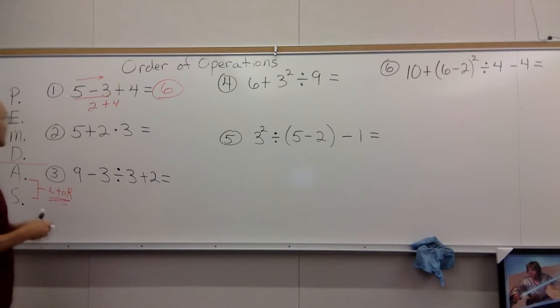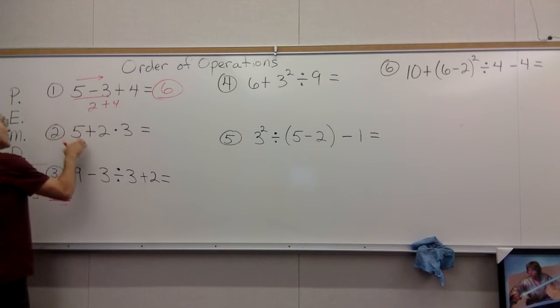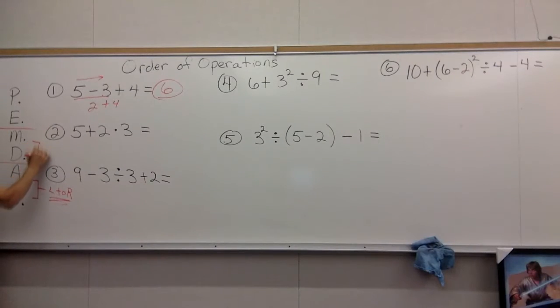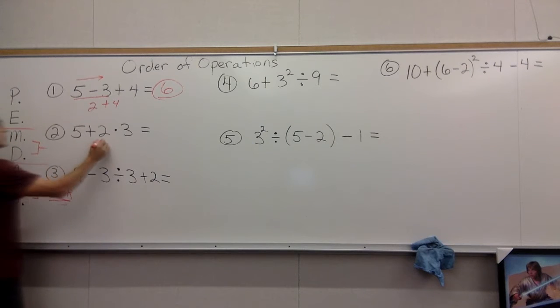Let's keep going. You cannot go left to right on number two because multiply and divide, which is also a pair that they're equal in importance, but they're always more important to do than add and subtract.